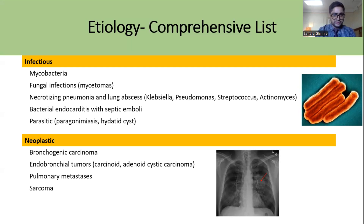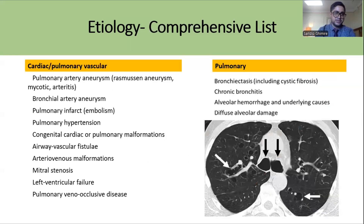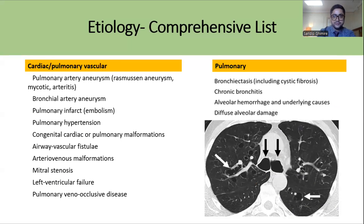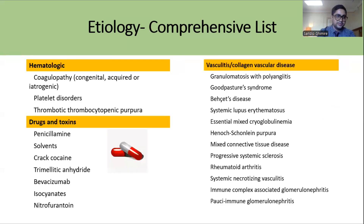Neoplastic causes such as bronchogenic carcinoma, pulmonary metastasis, and sarcoma can cause Massive Hemoptysis. Cardiovascular and pulmonary causes include bronchial artery aneurysm, airway vascular fistula, or chronic bronchitis. Hematological disorders like coagulopathy or thrombotic thrombocytopenic purpura can also cause Massive Hemoptysis.